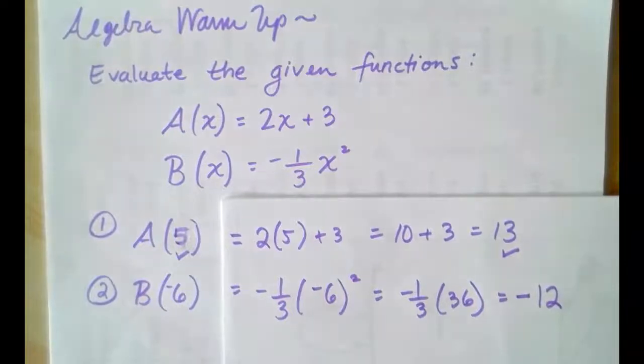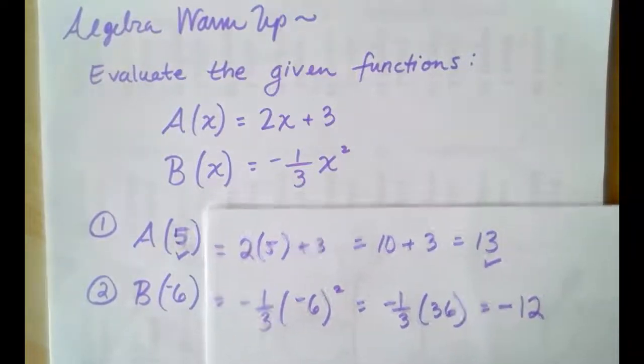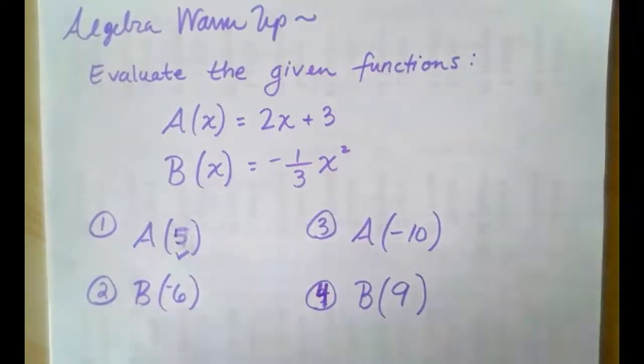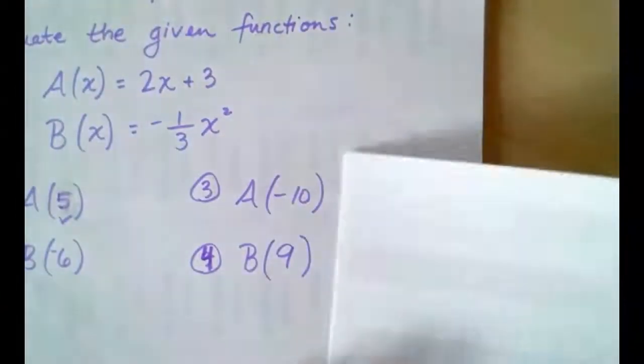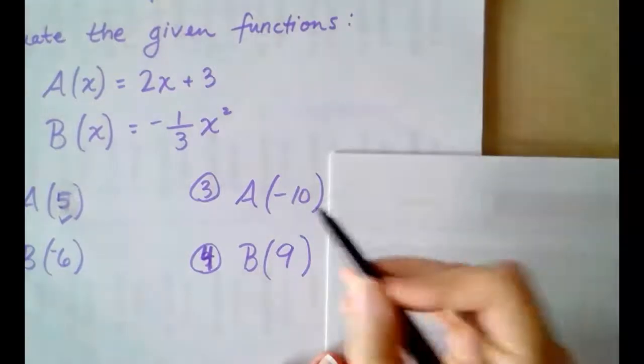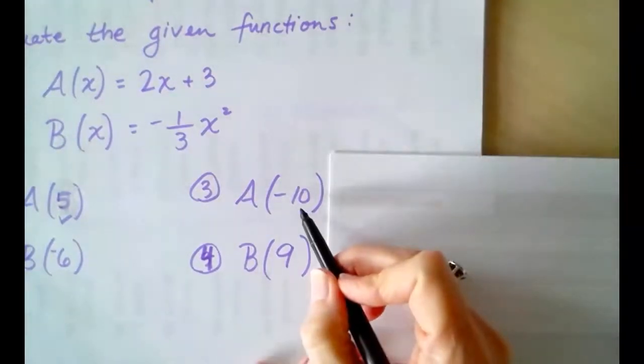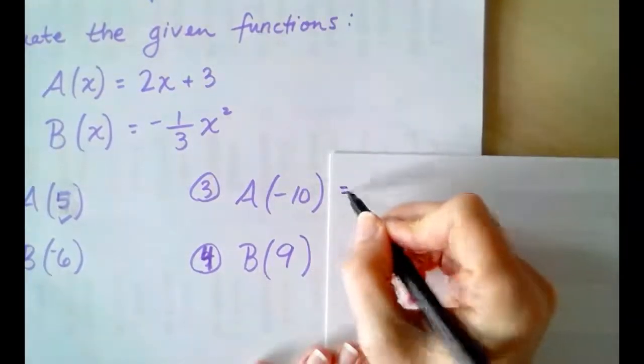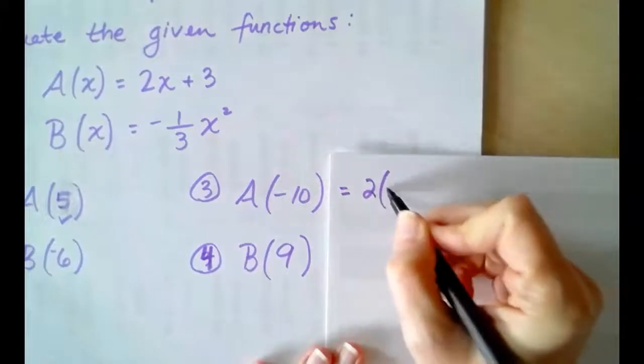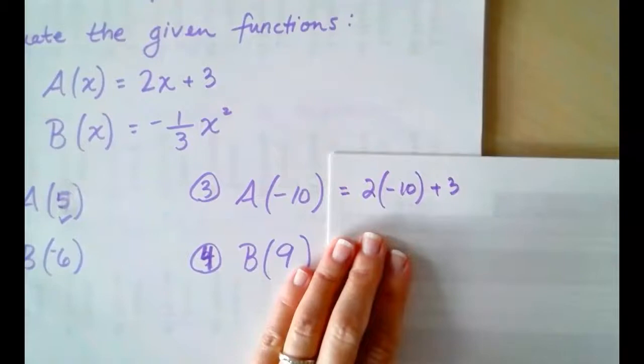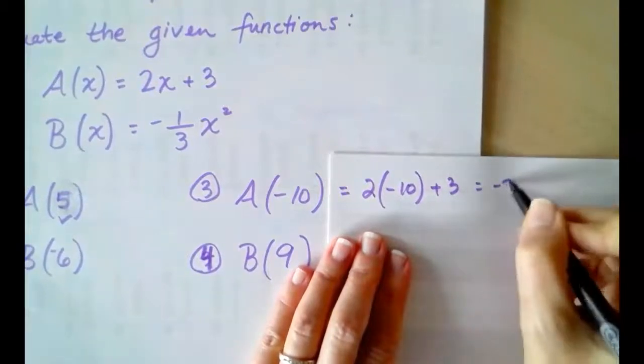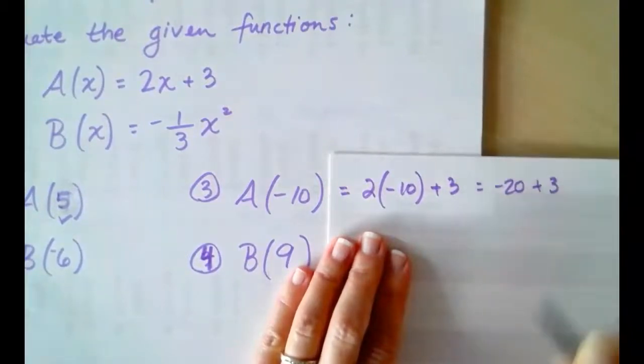So, there's number 1. Number 2, using the functions A and B. We keep going here, and we are going to evaluate A and B once again. And, this time, let your input equal -10 in the A function. 2 times -10 plus 3. 2 times -10 is -20, and -20 plus 3 is -17.